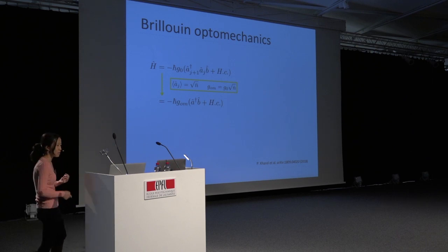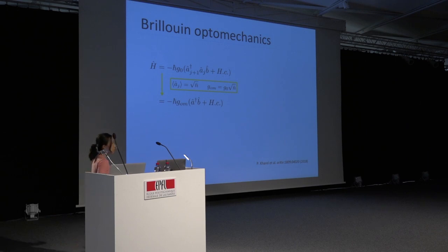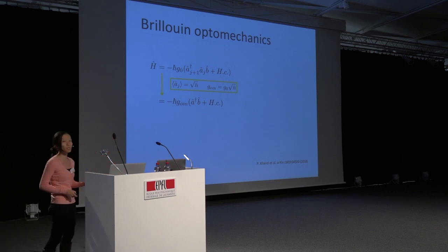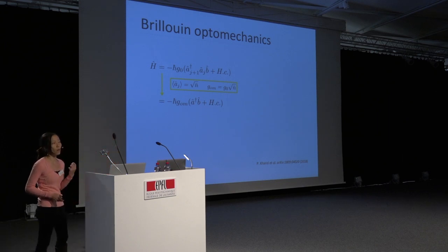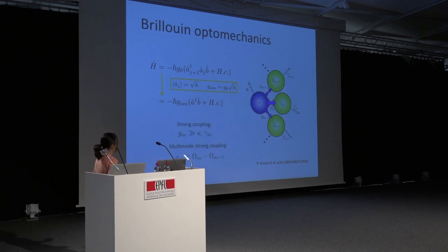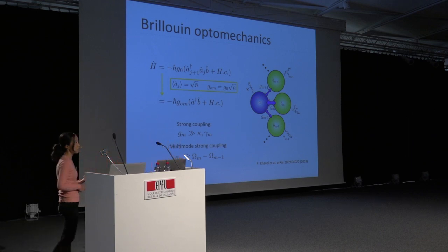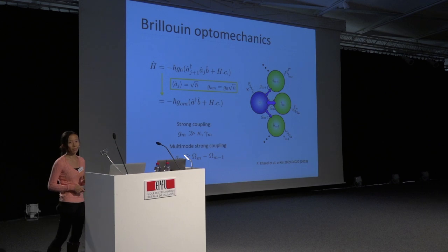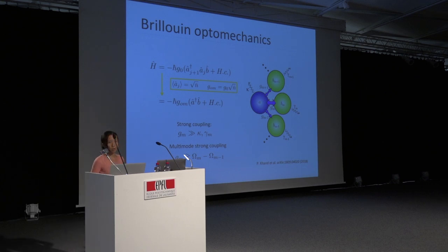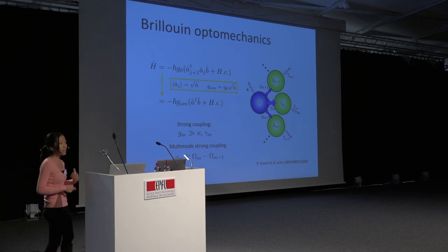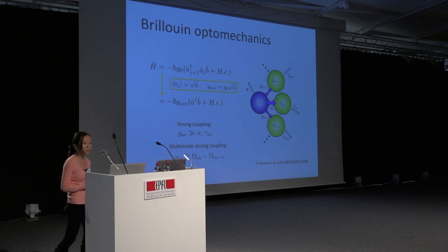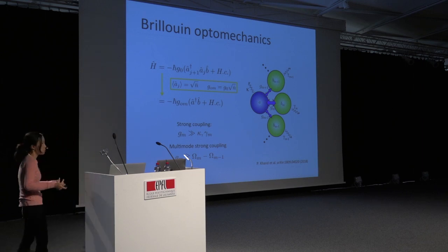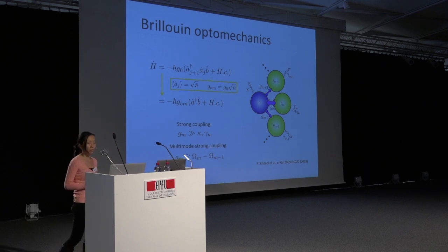If you pump one of the optical modes very strongly, you can replace the annihilation operator for that mode with the square root of the average photon number, which scales the interaction rate by sqrt(n_photons), giving you again the familiar Jaynes-Cummings Hamiltonian — just an interaction between one phonon mode and one photon mode with energy swapping between them. There's one additional interesting feature: in our system, the spacing between optical cavity modes is smaller than the linewidth of the optical cavity. This means a single optical mode can interact with many phonon modes — and not only can we be in the strong coupling regime, we can be in what's called the multi-mode strong coupling regime, where the coupling is bigger than the spacing between phonon modes.